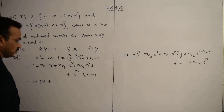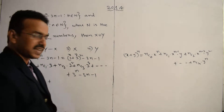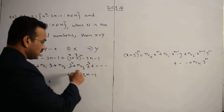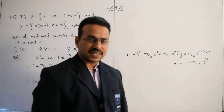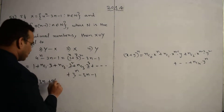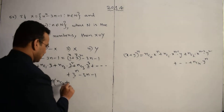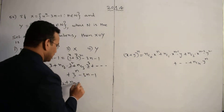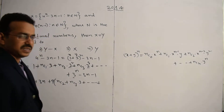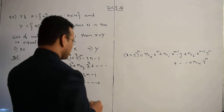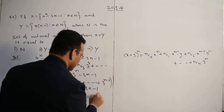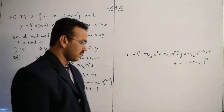In the next step, expanding fully: 1 plus n times 3 plus nC2 times 9 plus nC3 times 3^3 plus ... plus 3^n, minus 3n minus 1. Notice that from nC2 times 3^2 onwards, each term contains 3^2 equals 9 as a factor. So we can factor out 9 from those terms, giving 9 times (nC2 plus nC3 times 3 plus ... plus 3^(n-2)), minus 3n minus 1.